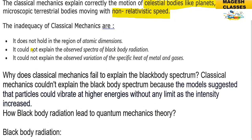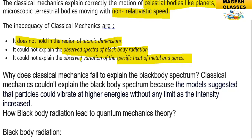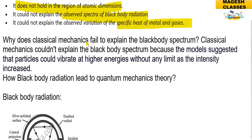The inadequacy of classical mechanics: it does not hold in the region of atomic dimensions — electrons, protons, neutrons. It cannot explain the observed spectra of black body radiation, and it cannot explain the observed variation of specific heat of metals and gases.